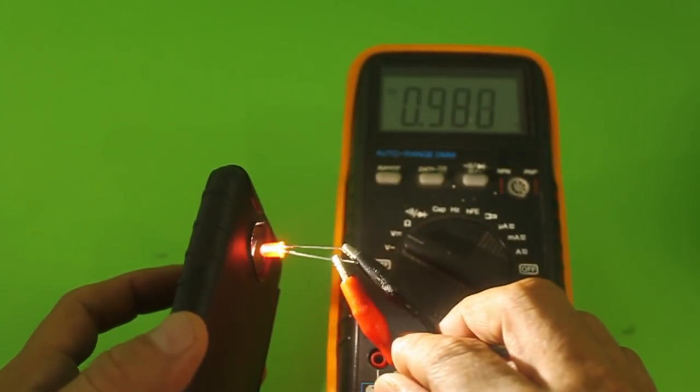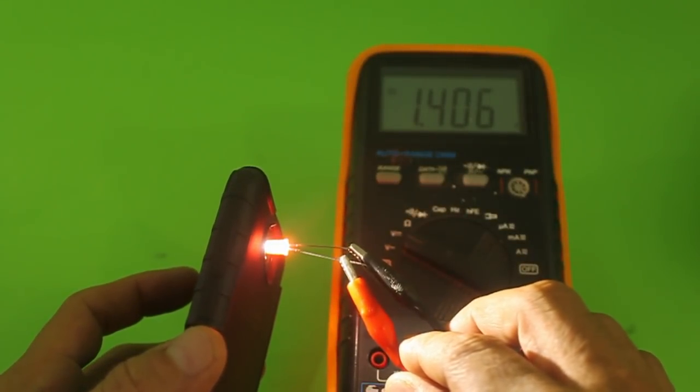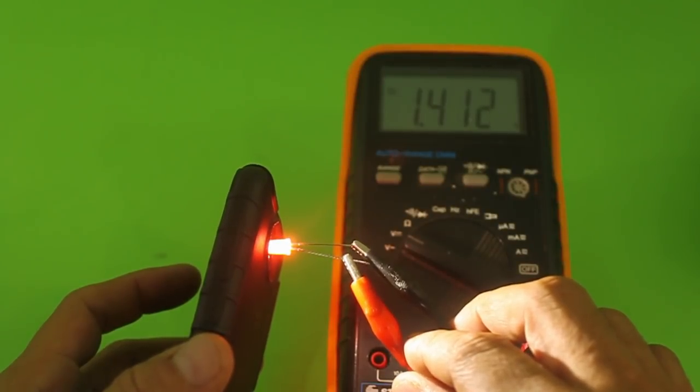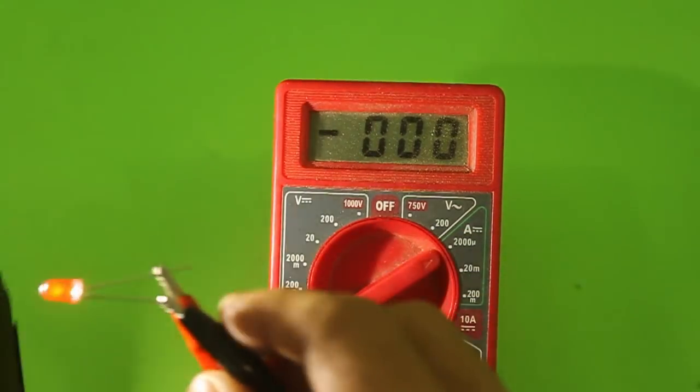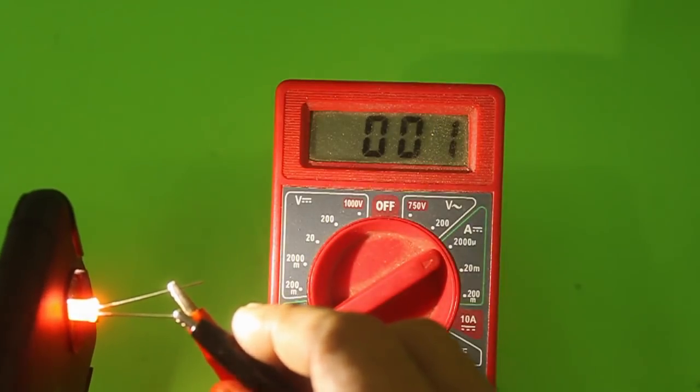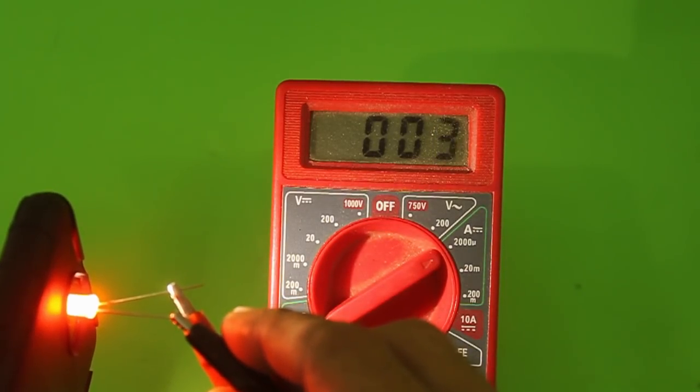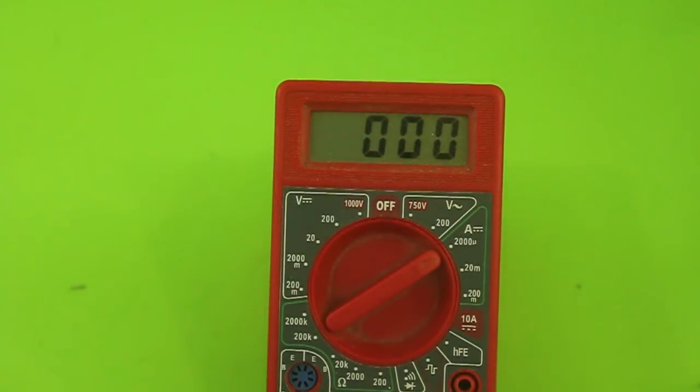So we get a voltage from the LED by applying light and we can use this to drive a circuit. Of course, the current generated is very small. Let's measure this current. It is about two or three microamps. So it is too small for any practical purpose.